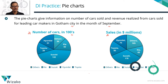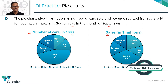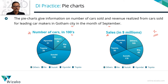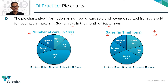Pie charts can give us data in terms of actual numbers or in terms of percentages. For example, Kia sold 4,200 cars and made 65 million dollars. If the data is given as a percentage, you don't need to do anything extra. But if it's given in numbers, dollars, or other units, the first step is to add up all the parts and find the total for each pie chart.